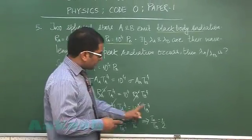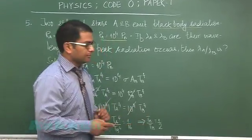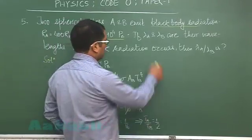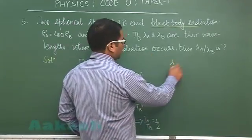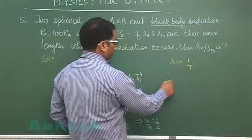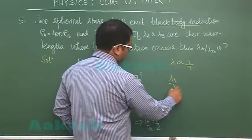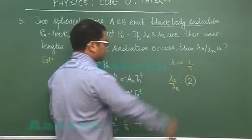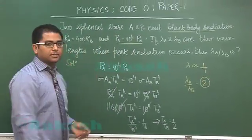Now these are their respective temperatures in Kelvin, and we know from Wien's displacement law the wavelength where maximum radiation occurs is inversely proportional to T. So quite obviously lambda A by lambda B would be 2, and this is the correct integer for question number 5.